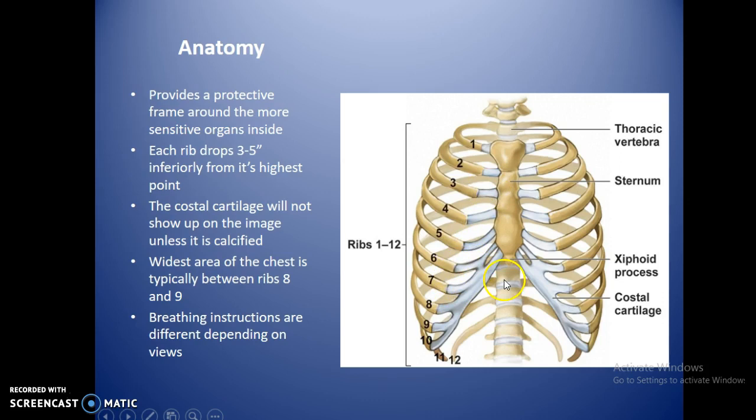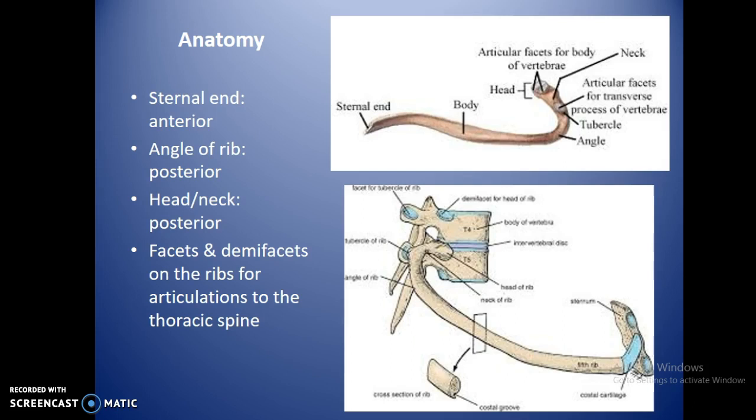The widest area of the chest is typically between ribs eight and nine — that is your widest point when looking at patients, not up at the top. For breathing instructions, it depends on whether we are above or below the diaphragm. Most ribs are imaged on inspiration; however, the lower ribs are done on expiration.